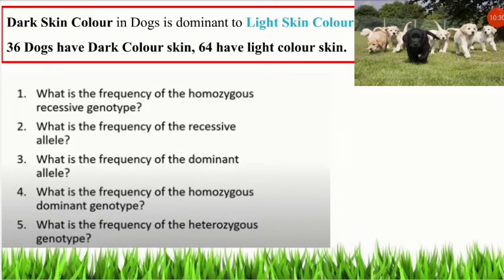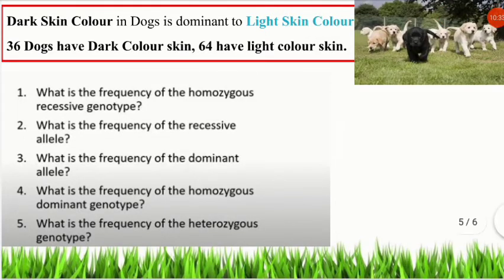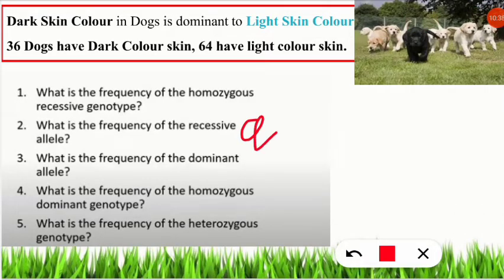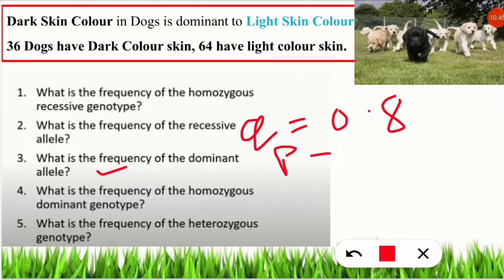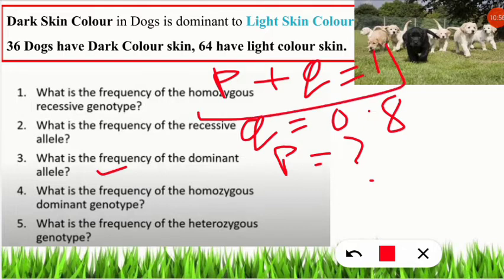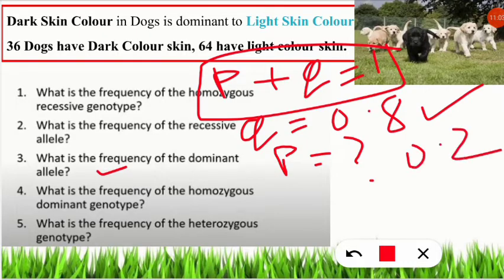Question 3: What is the frequency of the dominant allele? The dominant allele frequency is P. Using the Hardy-Weinberg equation P + Q = 1, and since Q = 0.8, we get P = 1 − 0.8 = 0.2. The frequency of the dominant allele is 0.2.